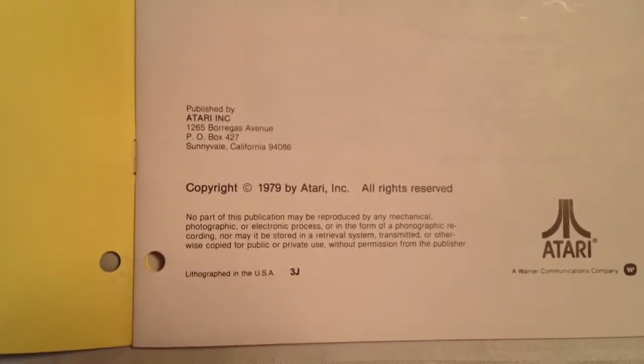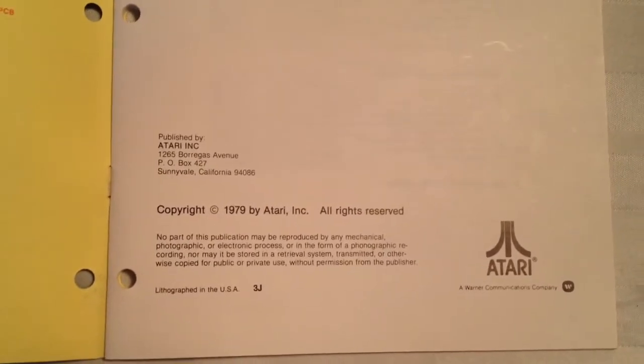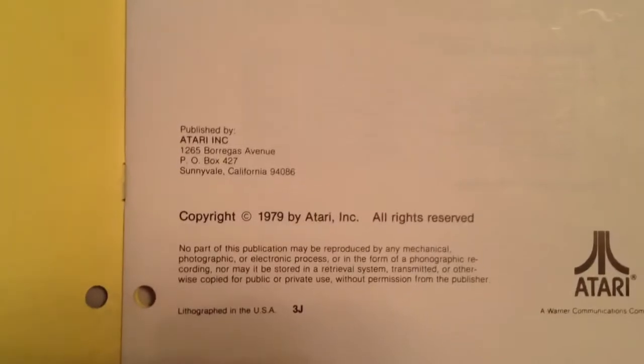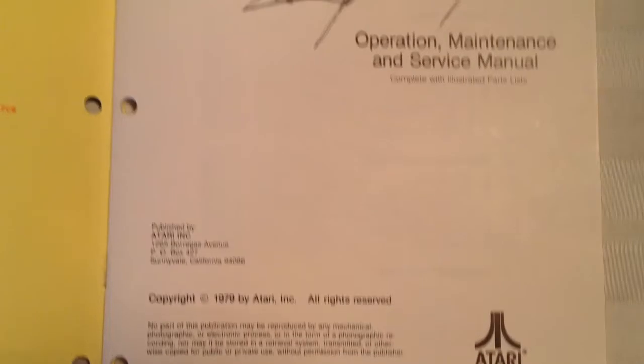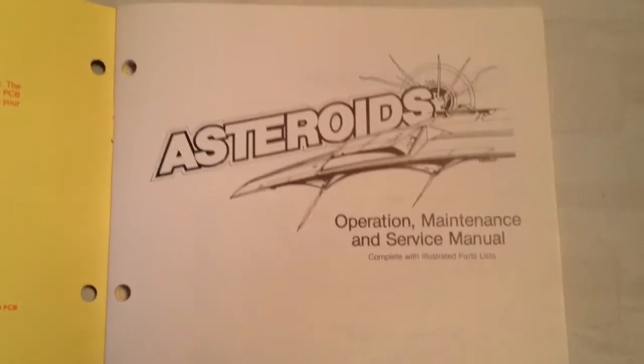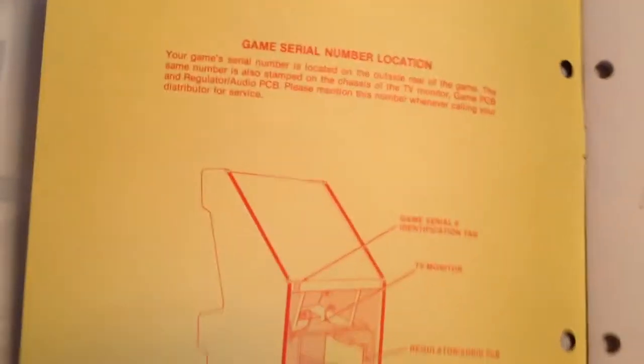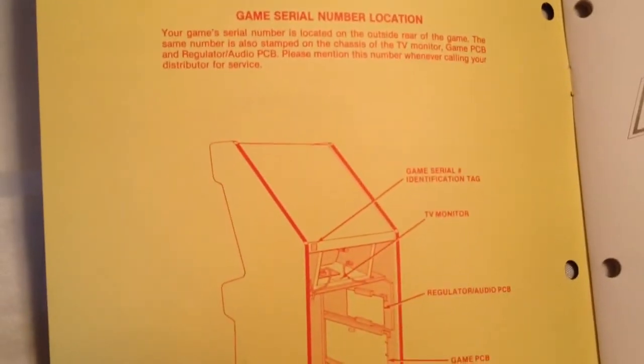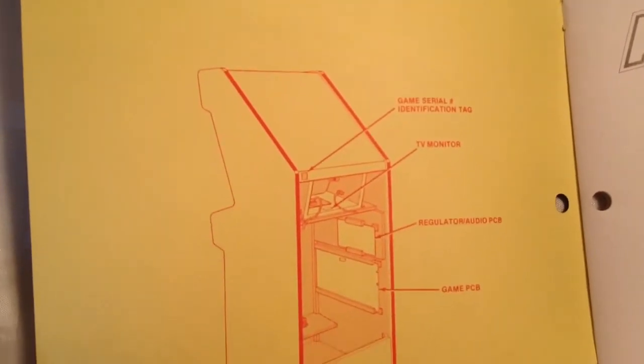It is from 1979 when the game was made. There goes the old Atari address. I'm not sure if that's still the Atari address anymore, and I'm not sure if Atari was going bankrupt. I believe it was. But yeah, this kind of has where everything is located when you first open it up. It tells you what the serial number location is, the monitor, the boards.